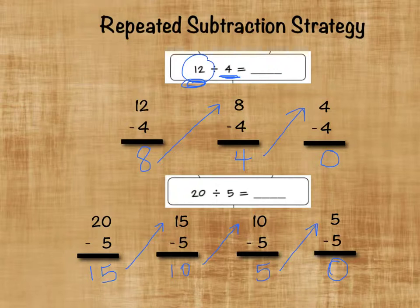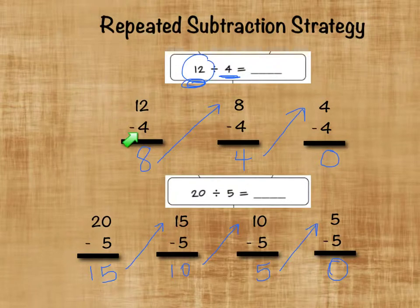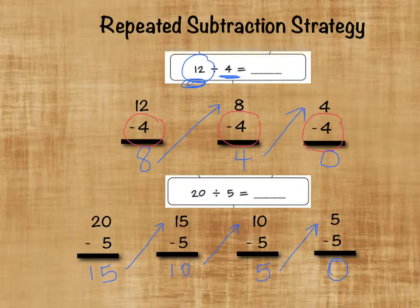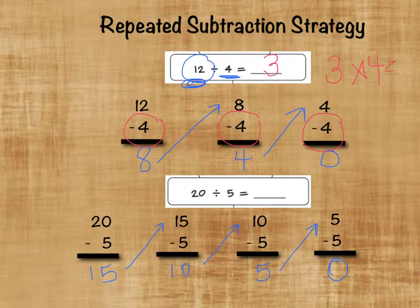Now what we need to do to know the answer to our problem is to count how many times we subtracted. So let's go back up to the first problem — 12 divided by 4. We took 12 and we subtracted 4. How many times did we subtract 4? We subtracted 4 one, two, three times. So 12 divided by 4 equals 3. We can check our work by doing it backwards: 3 times 4 equals 12.